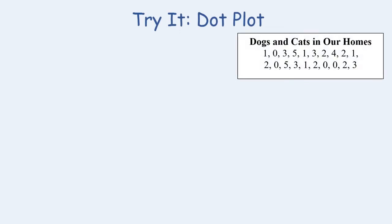Now let's create a dot plot as well as interpret and find variation and measures of center. So in the top of your screen we have dogs and cats in our homes and a survey was given and the data is recorded. First we're going to make a dot plot of the data.